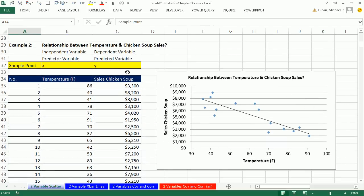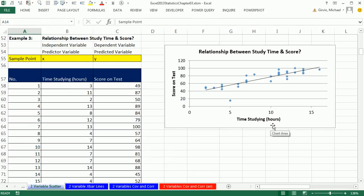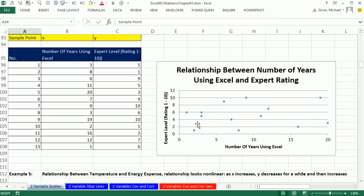Here's another example. Chicken soup sales, are they related to temperature? We went out and got some data, and it looks like as temperature increases, sales of chicken soup decrease. So this is inverse or negative. We saw how to chart this and talked about this back in Chapter 2. Our next example, studying time for a test and test score looks like it's direct or positive. As time increases, test score tends to increase.